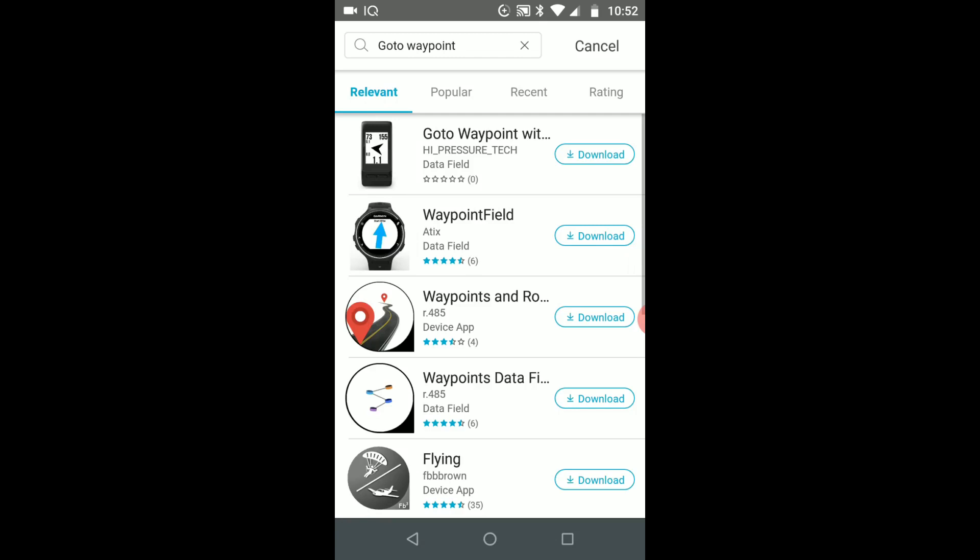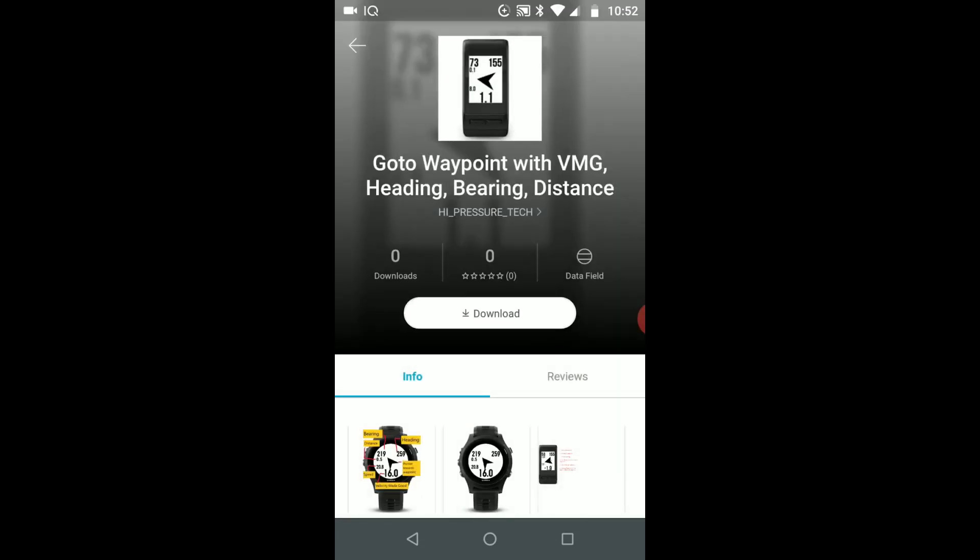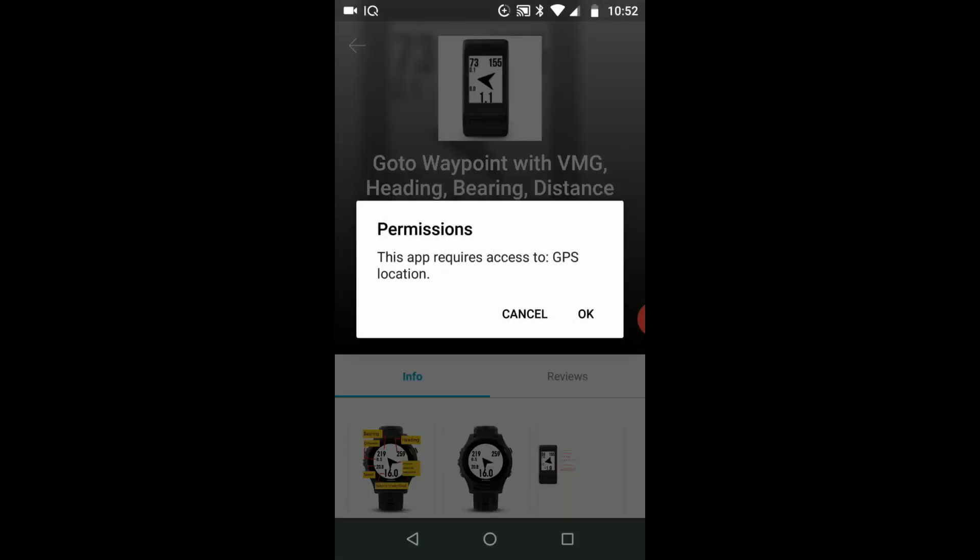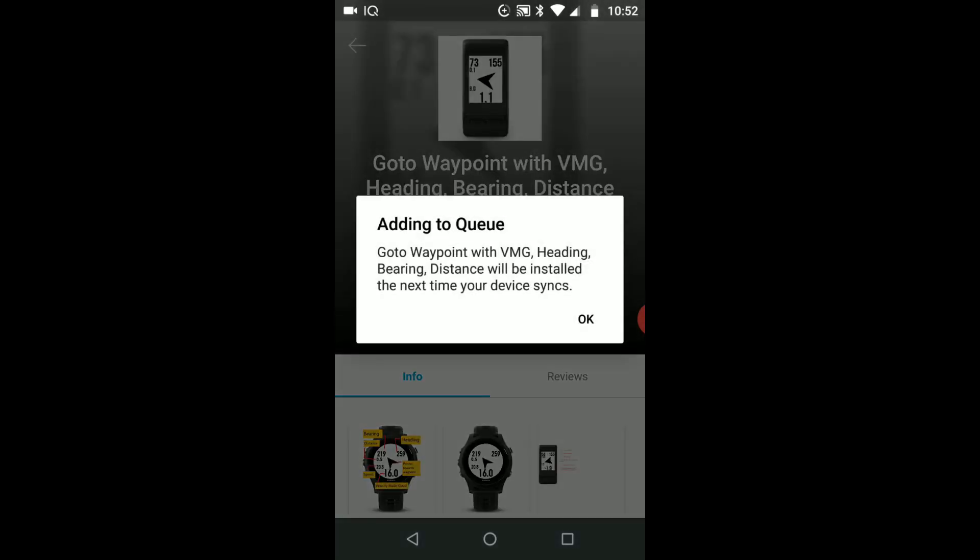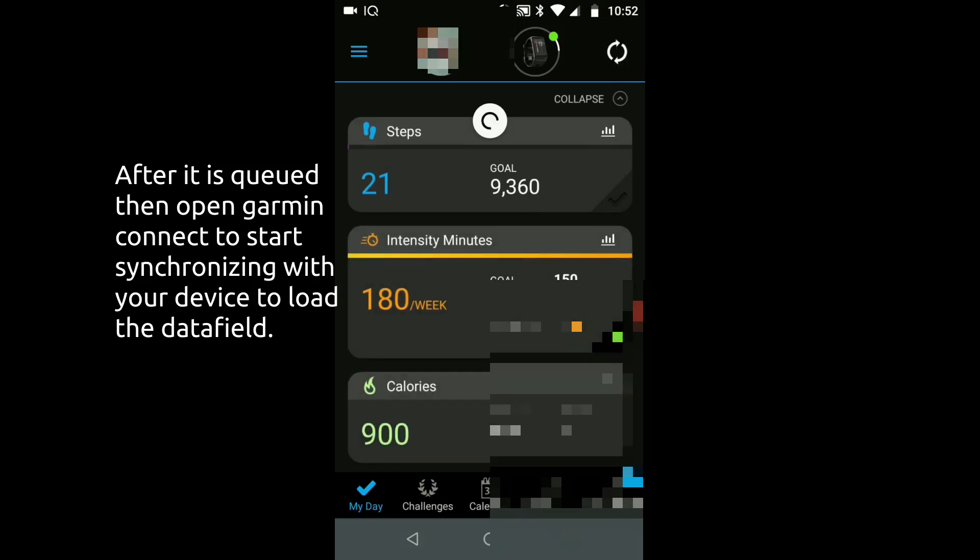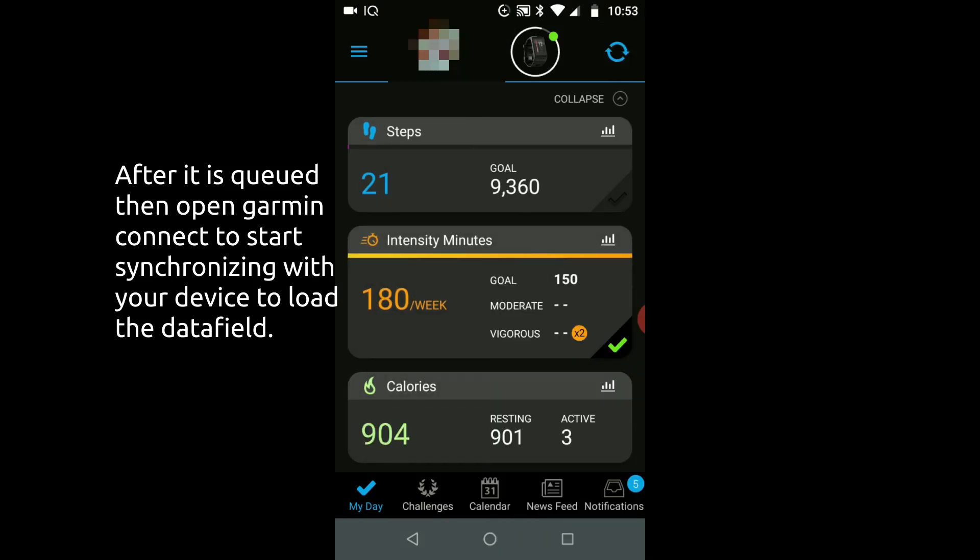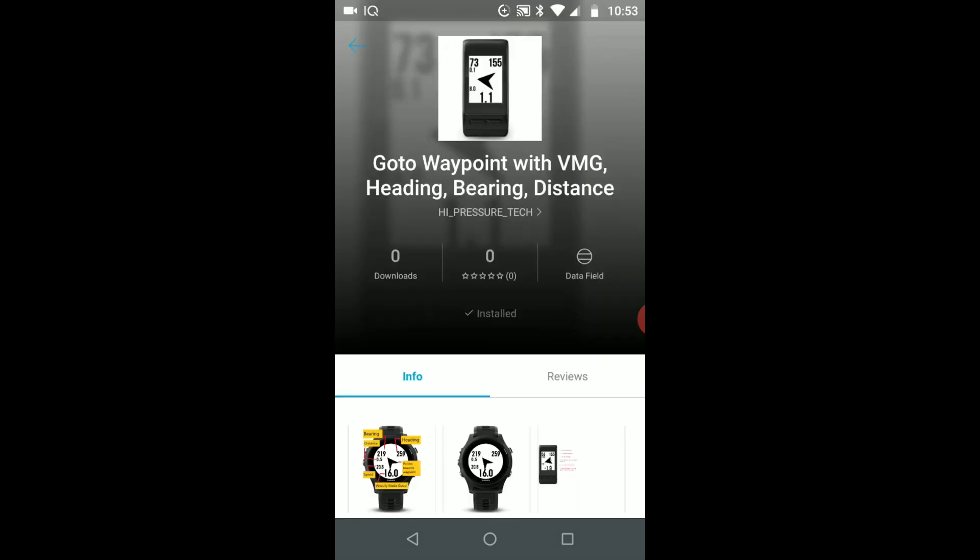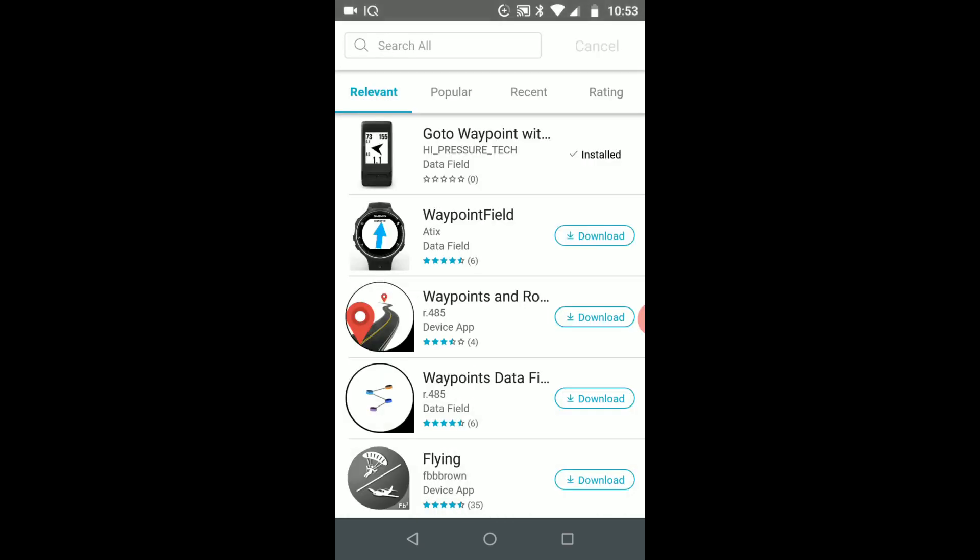So first you just need to download the app using Connect IQ. You find it, you download it, and you queue it up, and then synchronize it with your Garmin Connect or Garmin Express. Once this is done it will load into the app and then download to your watch and it will show that it's installed.